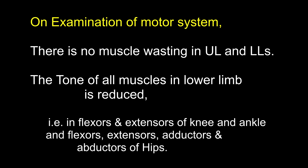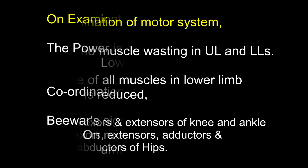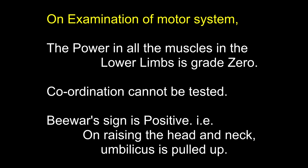In which conditions do you get increased tone of the muscles? In all upper motor neuron type of lesions — pyramidal and extrapyramidal disorders, decerebrate rigidity, tetanus and tetany, strychnine poisoning, and hysterical conditions. The power of all muscles in the lower limbs is grade zero. Coordination cannot be tested. Beevor's sign is positive. What is Beevor's sign? On raising the head and neck, if the umbilicus is pulled upward it indicates paralysis of the lower recti. A positive Beevor's sign indicates the level of the lesion to be around T10.